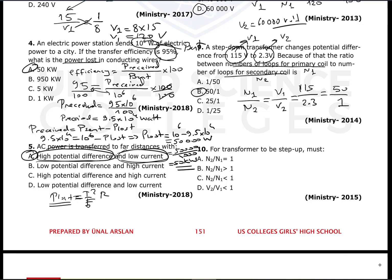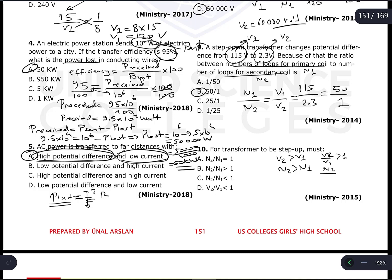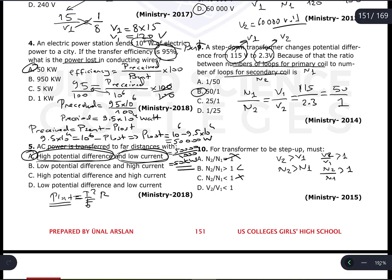Question 10: For a step-up transformer, V2 > V1 and N2 > N1. Therefore V2/V1 must be greater than 1 and N2/N1 must be greater than 1. Option B — N2/N1 > 1 — is the correct answer. Options stating N2/N1 < 1 or V2/V1 < 1 are incorrect for a step-up transformer.